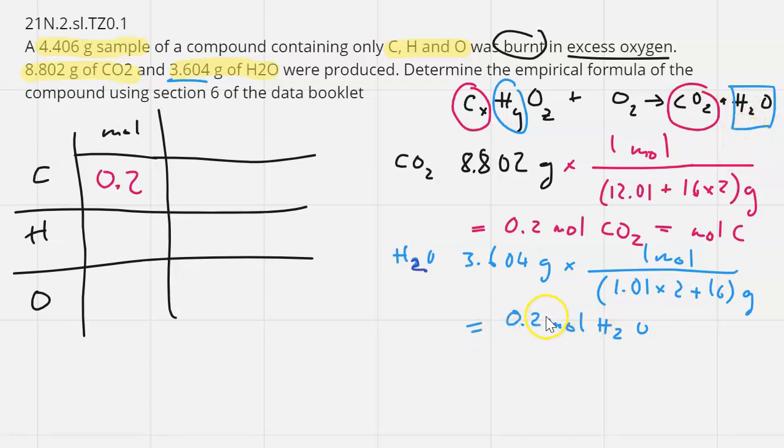So 0.2 mole of water is really 0.2 multiplied by 2 mole of hydrogen, because water is H2O. For every mole of water you will have 2 mole of hydrogen, so 0.2 mole of water would be equal to 0.4 mole of hydrogen. So it is not like with carbon with one to one.